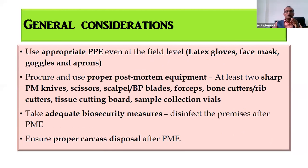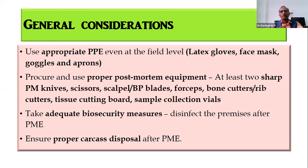Once you decide to do the post-mortem examination in the field, make sure you possess appropriate personal protection equipment. You don't need full hospital-grade PPE — good quality waterproof latex gloves, a good quality face mask, some goggles for your eyes, and aprons will serve as PPE. The proper post-mortem equipment is also very, very important. You need at least two sharp post-mortem knives, two scissors (one straight and one bent), scalpels and BP blades, and some forceps.